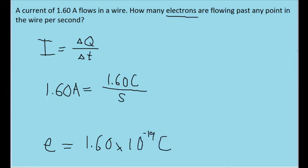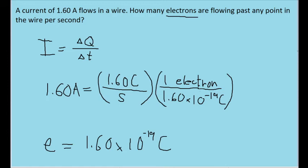We can use this fact as a conversion factor to convert from coulombs to electrons. So I have multiplied the coulombs per second by the conversion factor, where I put coulombs in the denominator so that the units will cancel out. And since there are 1.6 times 10 to the negative 19 coulombs in one electron, this conversion factor holds true.